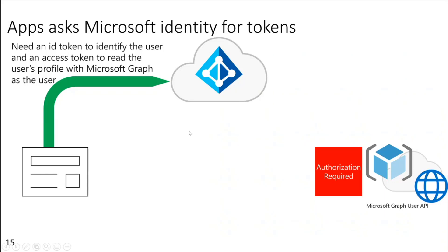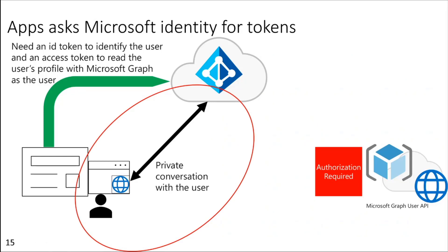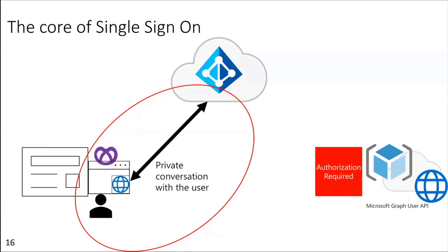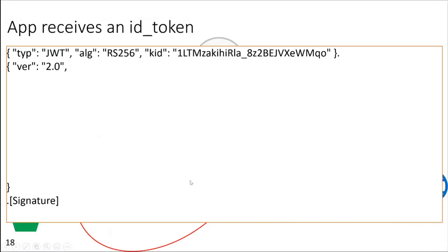A private conversation with the user will begin initially, even before it talks to the web API. This is where a cookie session starts — this is the core of single sign-on. Once the cookie session starts, the app will receive an ID token. This is how an ID token looks. We have the header claim giving you the token type (JSON web token), the algorithm used, and the kid — a string that specifies the thumbprint for the public key used for validating the token signature.